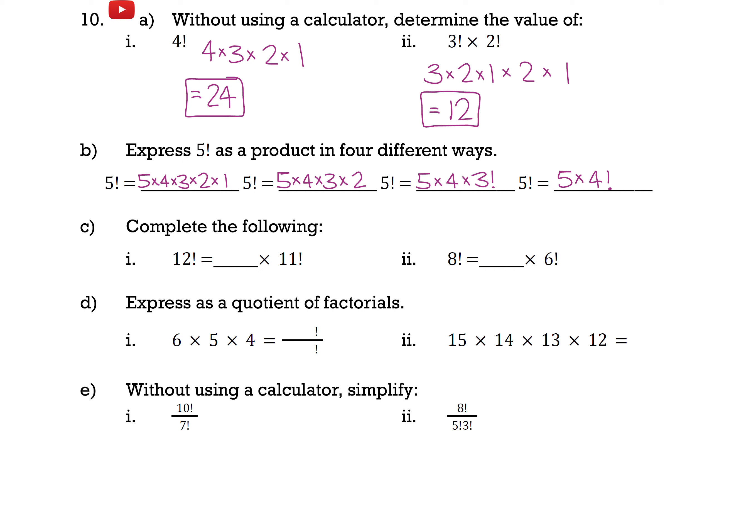Part c is asking us to complete the following. So 12 factorial equals something times 11 factorial. Well, based on the work we just did, 12 factorial would just be 12 times 11 factorial.